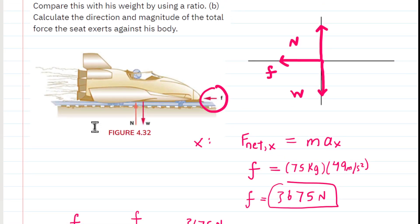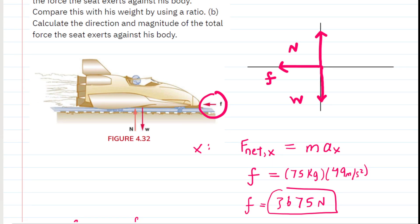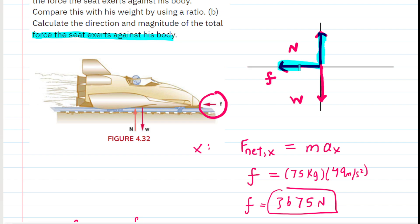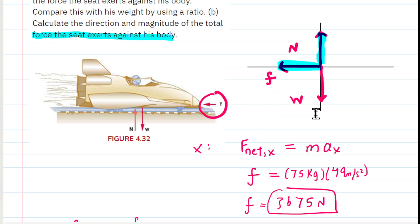In part B, we are asked to calculate the direction and magnitude of the total force that the seat exerts against his body. We are looking only at the forces the seat exerts. Of the three forces, the normal force is one — the seat pushing upward on the driver. The other is the horizontal force F. The weight is not included because it is not exerted by the seat; it is Earth pulling down on the driver.